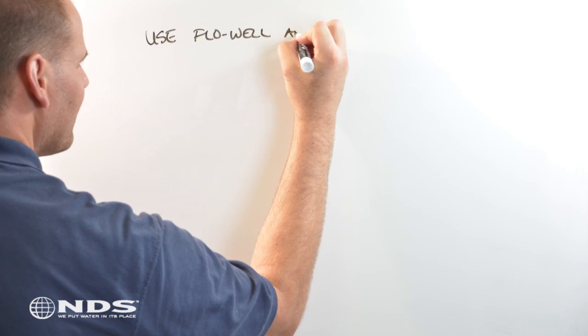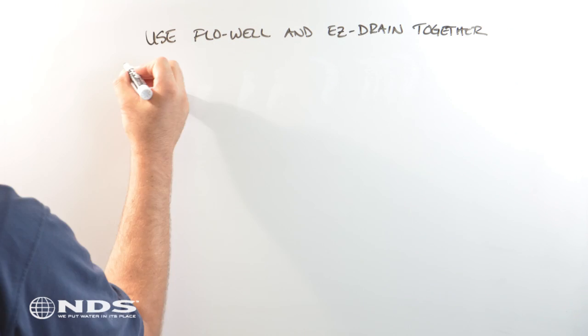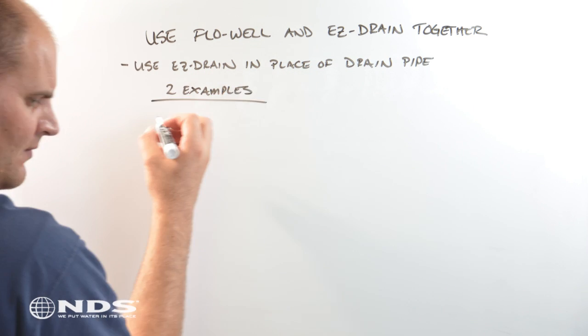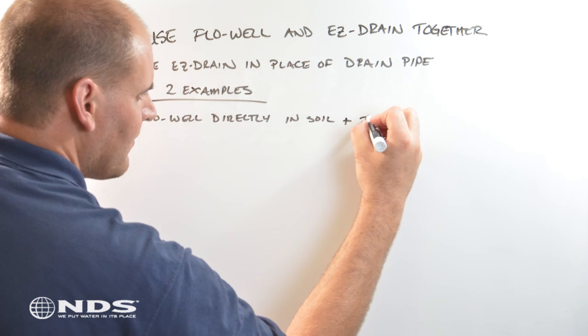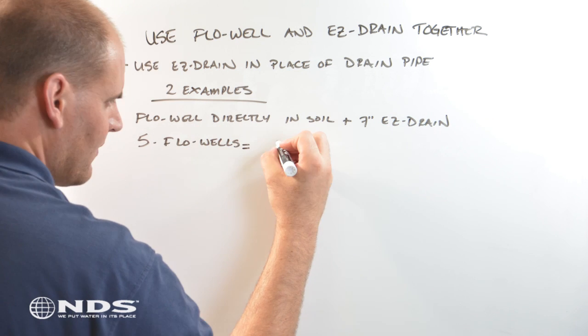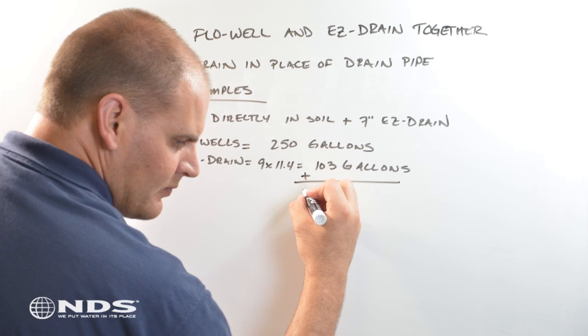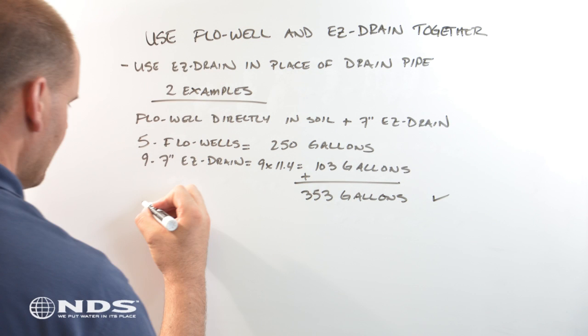Easy drain and flow wells have been designed to work together to create a complete drainage system. Here are two different ways to store 359 gallons of water using flow wells and easy drain together. Five flow wells installed without backfill can store 250 gallons. Nine sections of 7 inch easy drain can store 103 gallons of water. Together, they hold 353 gallons of water.